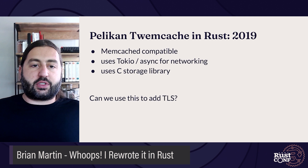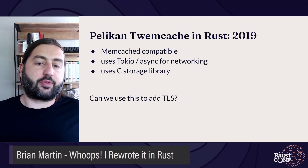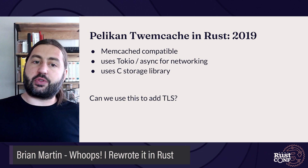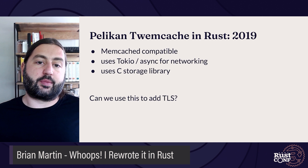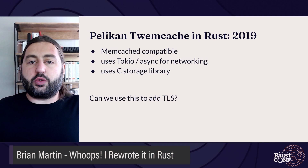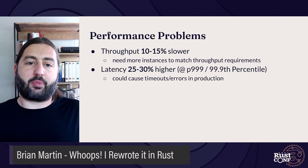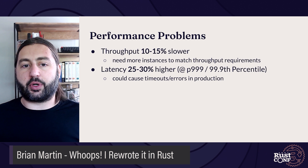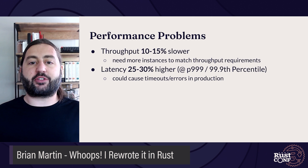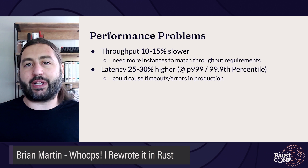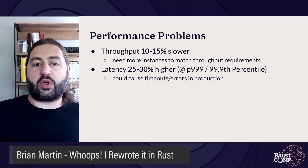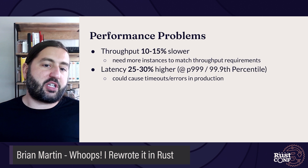We had the 2019 Rust implementation of Pelican Twemcache — Twitter's Memcache fork — which used Tokio and async for networking and the C storage library. When we did performance testing, we found some problems. The throughput was about 10 to 15% slower, meaning we'd need 10 to 15% more instances to match throughput requirements — so 10 to 15% more expensive to run. On top of that, the latency was 25 to 30% higher at the P99.9, which meant we could potentially see timeouts and errors in production.